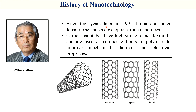A few years later, in 1991, Iijima and other Japanese scientists developed carbon nanotubes. Carbon nanotubes have high strength and flexibility and are used as composite fibers in polymers to improve mechanical, thermal, and electrical properties. Carbon nanotubes have different structural arrangements such as armchair, zigzag, and chiral configurations.